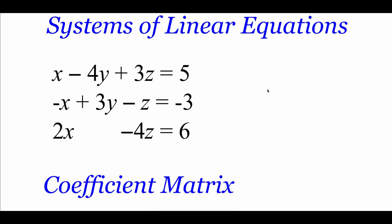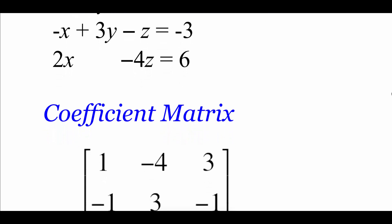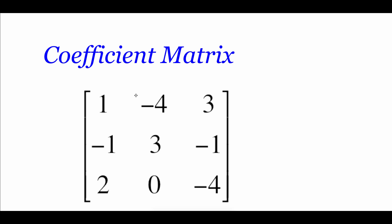In the last chapter, we did a lot with systems of equations. What we're going to work on in this chapter is taking those systems of equations and rewriting them as matrices. Here we've got a system of three equations, and the first matrix we can set up is called a coefficient matrix — we just take all of the coefficients on our variables. So the top equation had 1 in front of x, negative 4 in front of y, and 3 in front of z, becoming the first row. The second equation gives us negative 1, 3, negative 1. The last equation had 2 in front of x, no y terms so we fill in a 0 placeholder, and negative 4 in front of z.